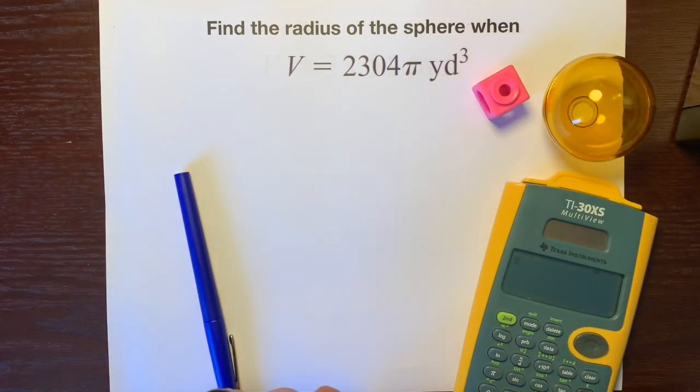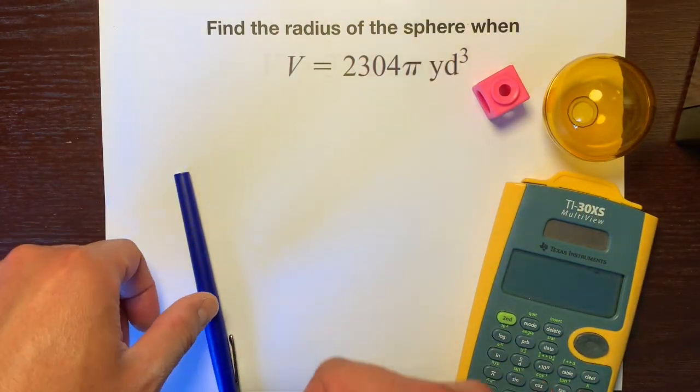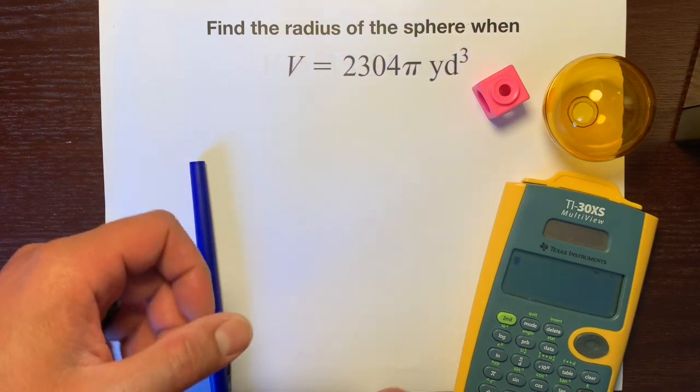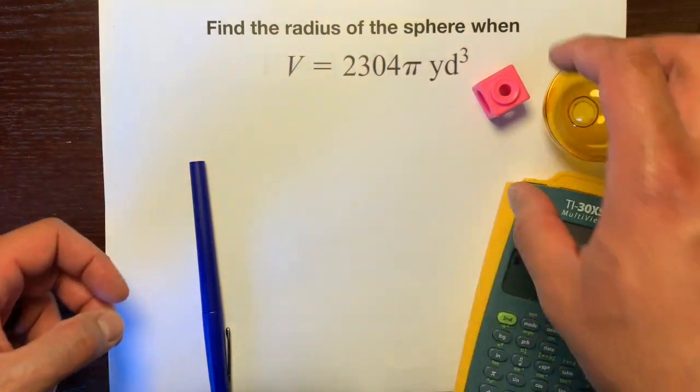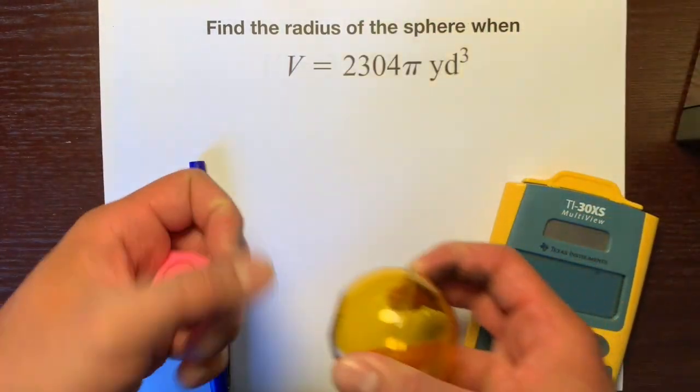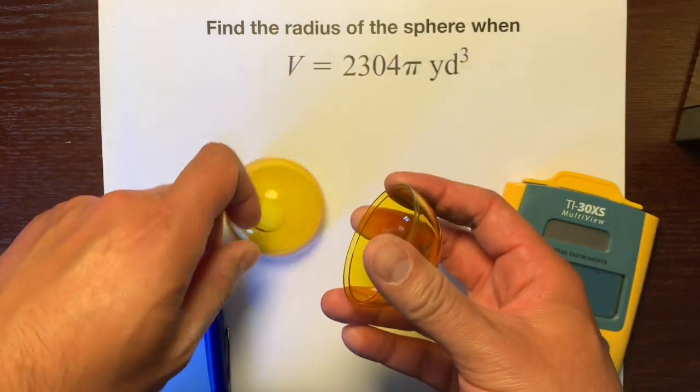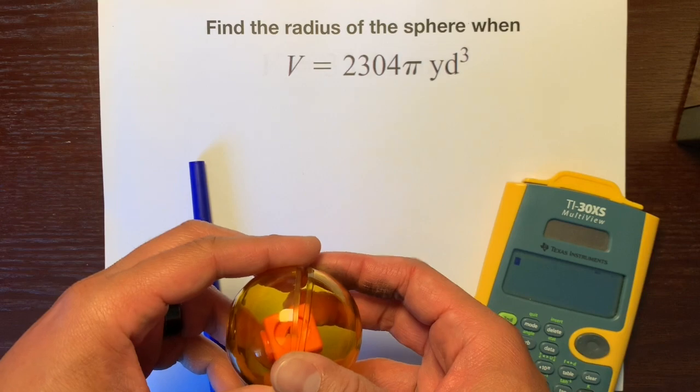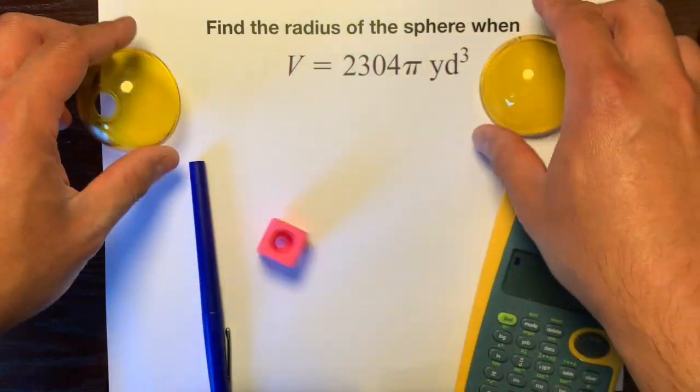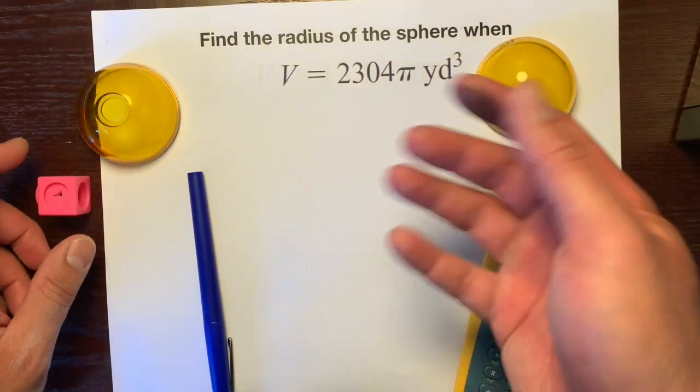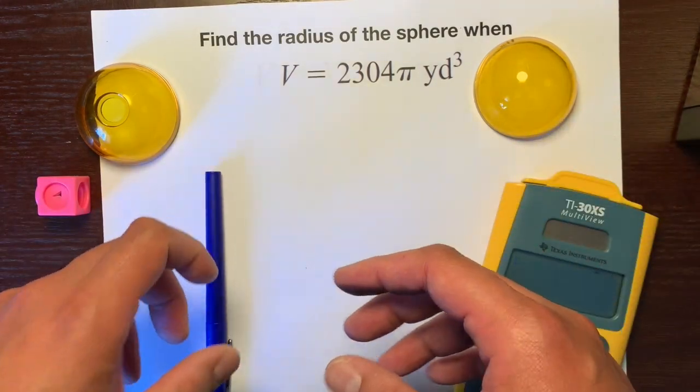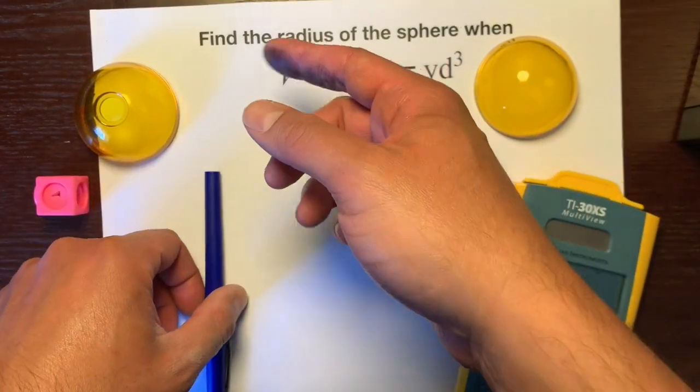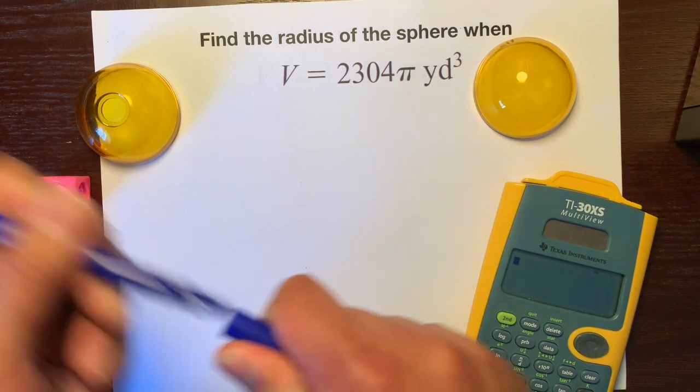Hello, this is Mr. Kenyanola and I'm going to help you find the radius of a sphere when you're given the volume. So here's our sphere and this is how many cubes fit inside. For this example we have 2,304π cubic units that fit inside of this sphere and our goal is to figure out what the radius is.